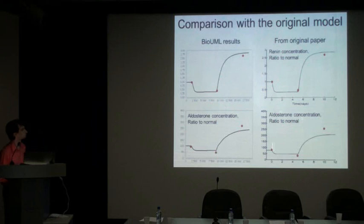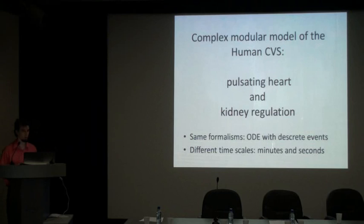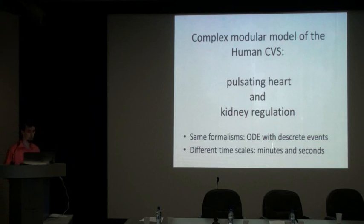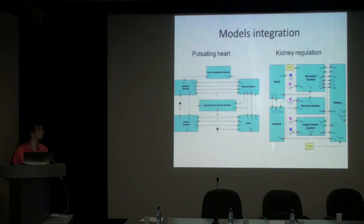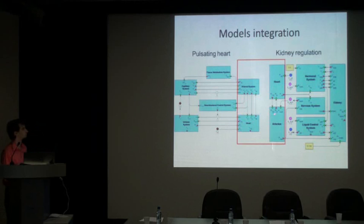Now let's get to the model combination. The first is an easier step: we want to aggregate the model of the cardiovascular system with pulsating heart with the kidney regulation model. These models utilize the same formalism — ODEs with discrete events — but at different time scales: minutes and seconds. Here are those models. First of all, we notice that those models have several similar functional blocks: arteries and heart.